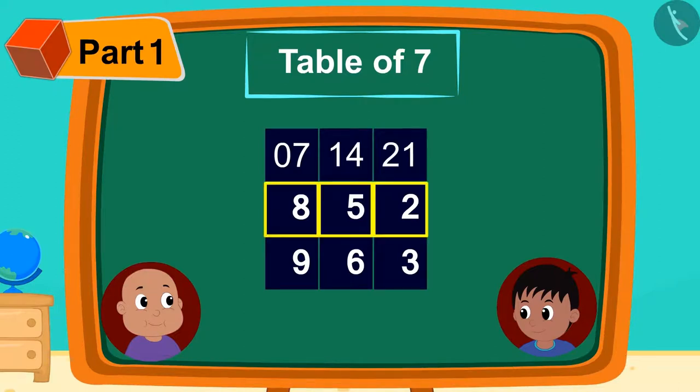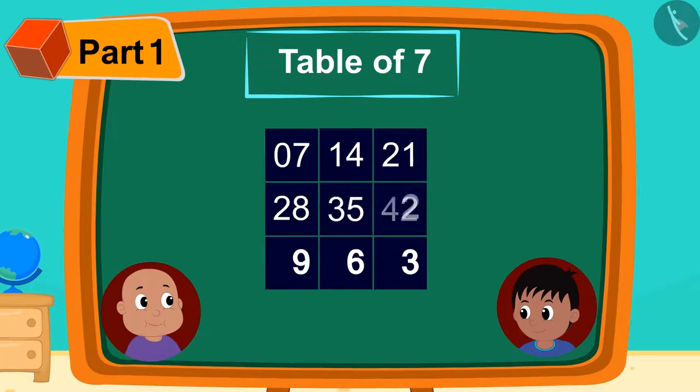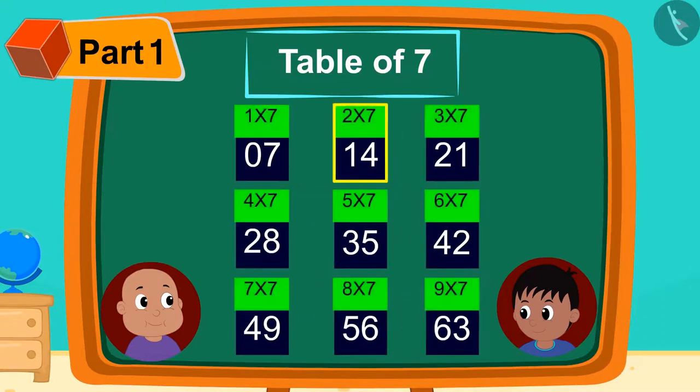Then next to the digits in the second line, he wrote 2, 3, 4. And in front of the digits of the third line, he wrote 4, 5, 6. Here we have our table of 7 ready.